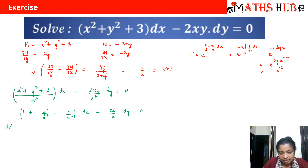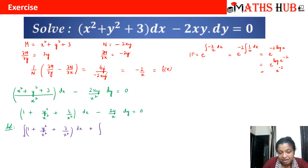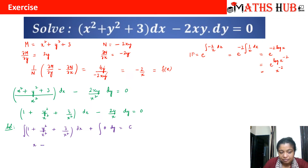The solution is ∫(1 + y²/x² + 3/x²) dx plus terms of N not containing x. The term −2y/x contains x so it is not considered. Integrating: 1 integrates to x, y²·x^(−2) integrates to −y²·x^(−1), and 3·x^(−2) integrates to −3x^(−1). So the solution is x − y²/x − 3/x = c.